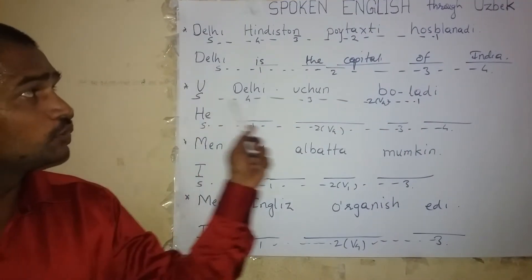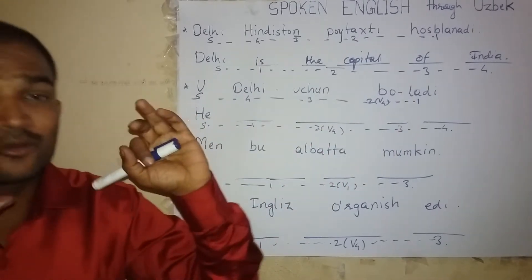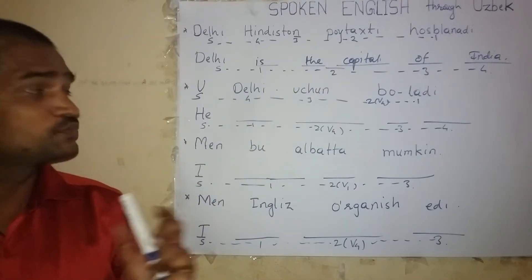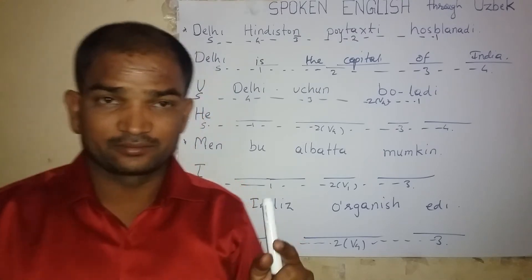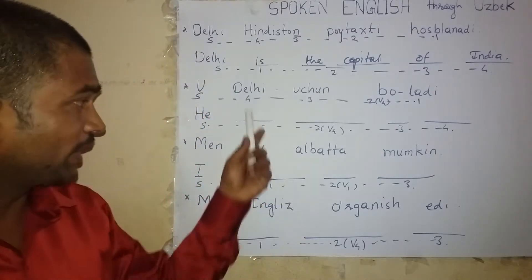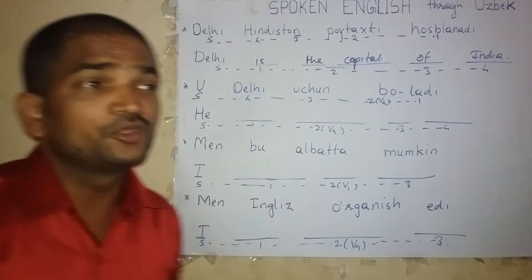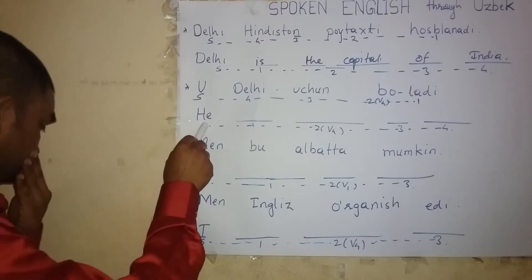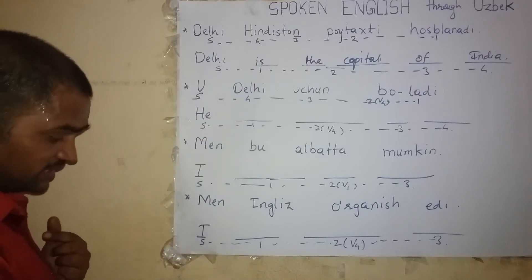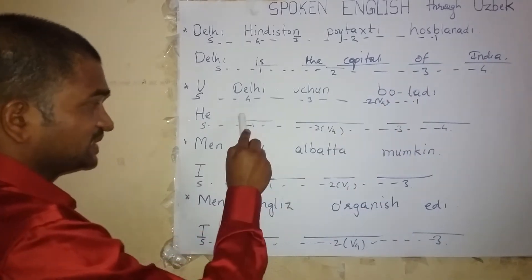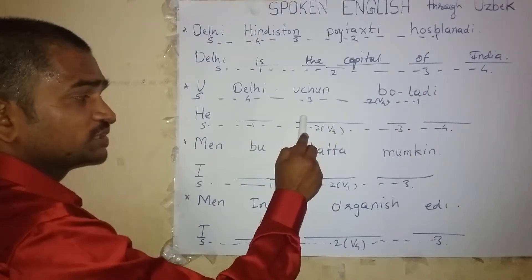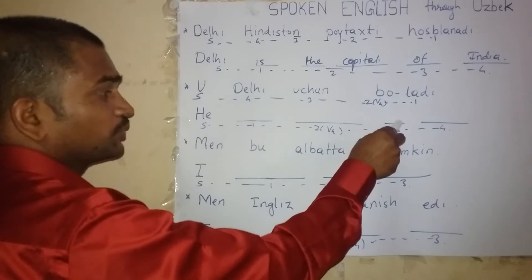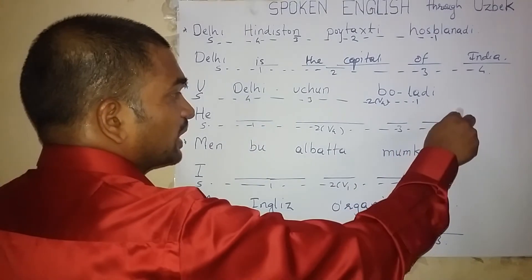Now, what should you do? Look at this Uzbek sentence, and while your eyes are on the sentence, try to speak it in English again and again, about 100 times. There is a comment box below this video — type the sentence there. For example: H-E for 'he,' then 'is,' then 'going' — G-O-I-N-G, 'to' — T-O, then Delhi — D-E-L-H-I.